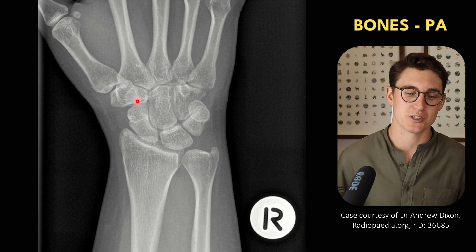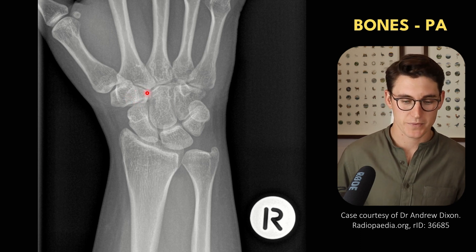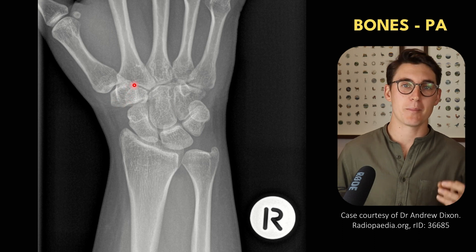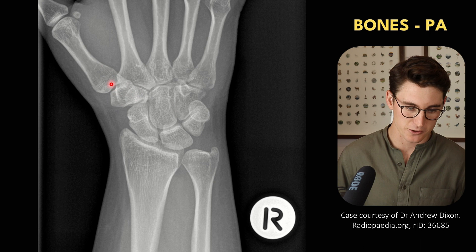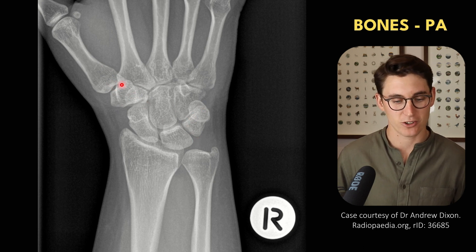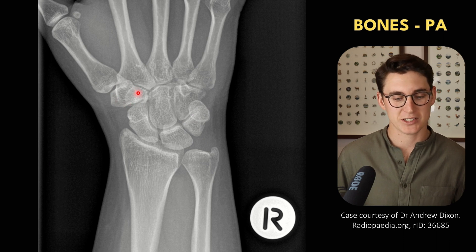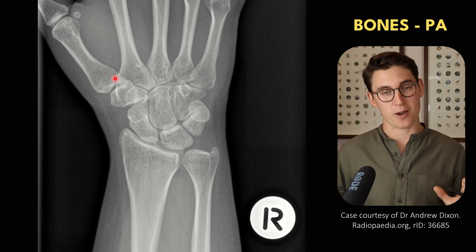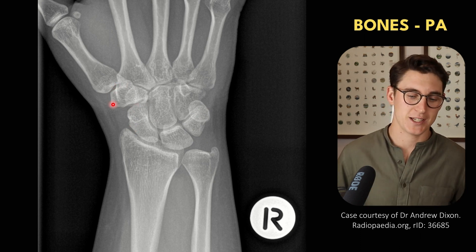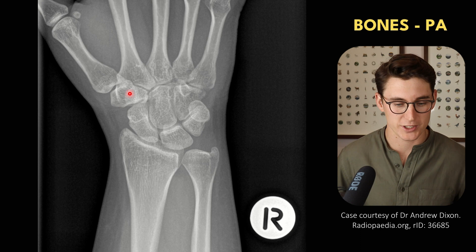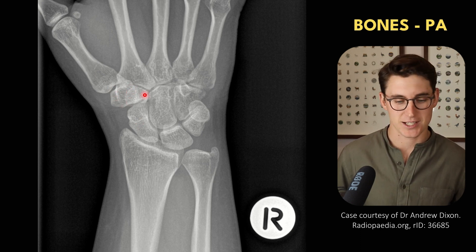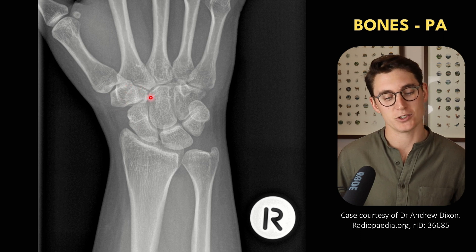Then we have paired bones: our trapezoid bone and our trapezium bone. Many people remember trapezium is under the thumb, which is a good way to remember it. The best way to distinguish them is that the thumb and the scaphoid trap the two bones between them — our trapezium would be trapped between the scaphoid and the thumb when we fall. So our trapezium is lateral and our trapezoid is slightly medial to that.